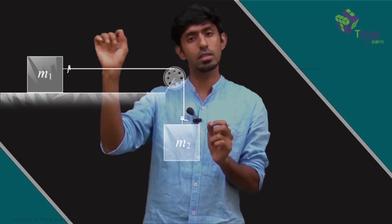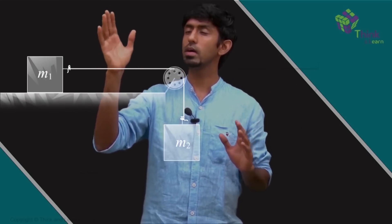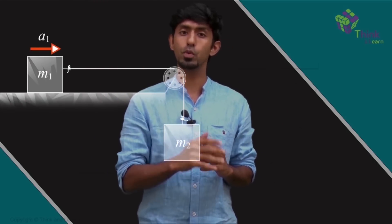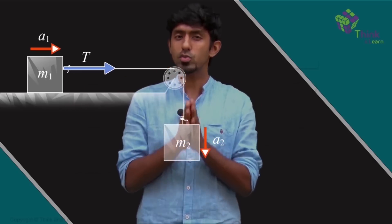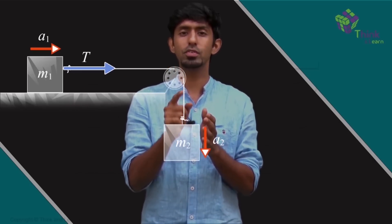So now we have established that no matter what the ratio of masses are, the system will move. So let the acceleration of m1 be a1 and the acceleration of m2 be a2. The string will have some tension, there will be T. Now watch what happens as you find out what the value of T is.